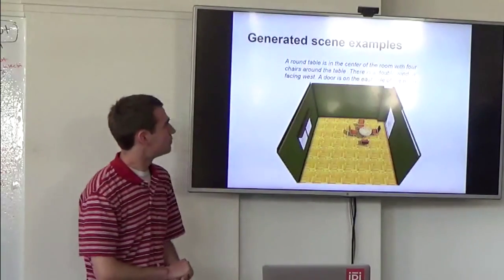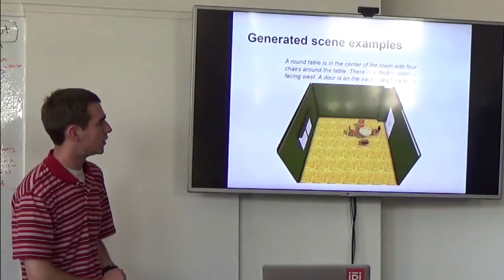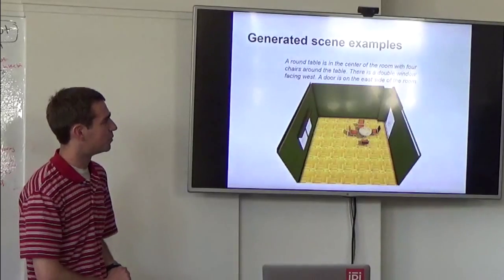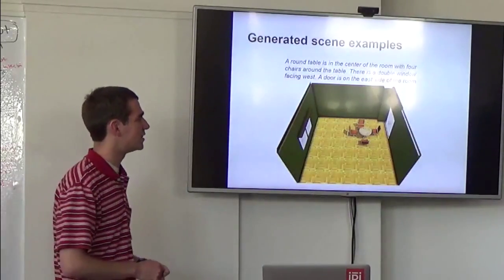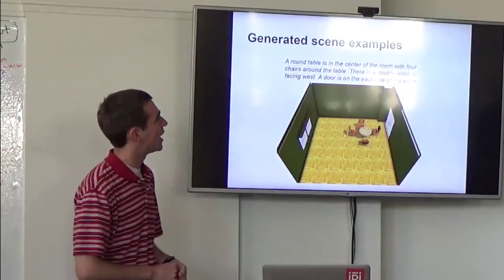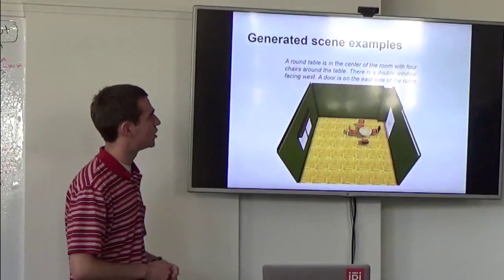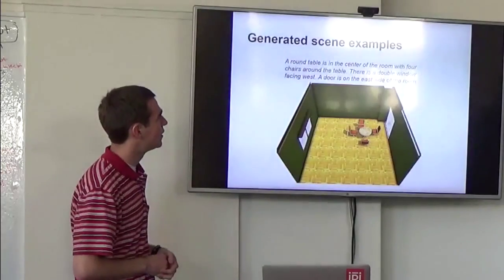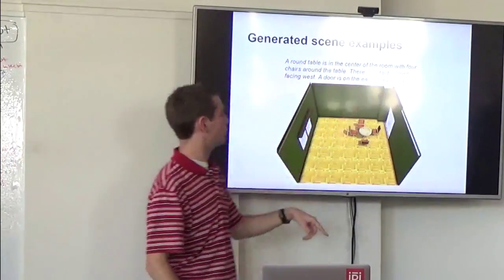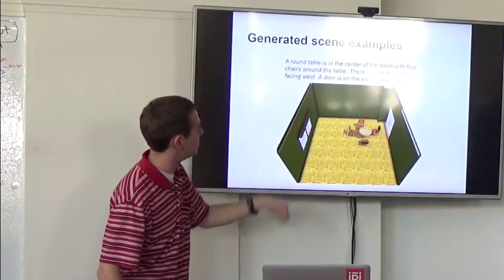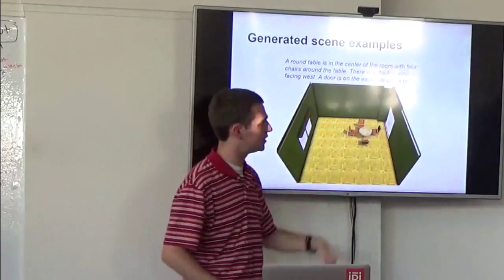And so here's an example of what can be output from this system once we combine these two elements. So here we have a round table in the center of the room with four chairs around the table. Got it, got it. There's a double window facing west. There's a door on the east side of the room.